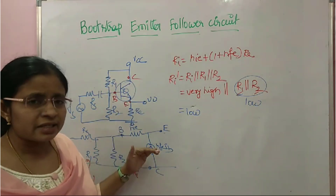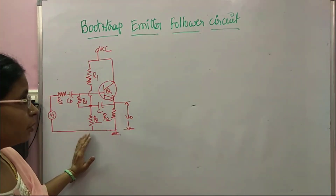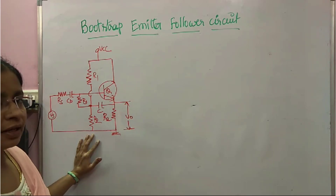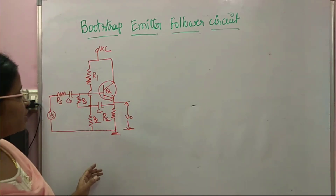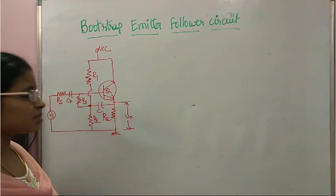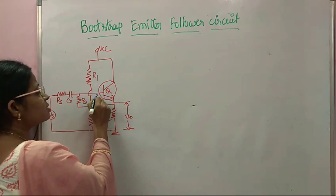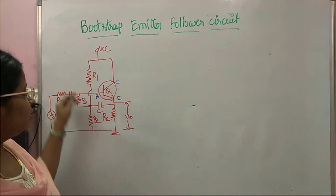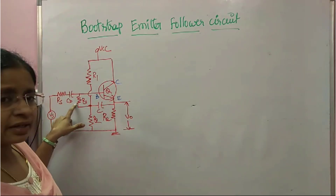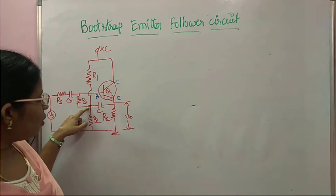Now I'll explain the bootstrap emitter follower circuit, which is an alternative for the high impedance CC amplifier. You know the emitter follower circuit is another name for the common collector amplifier. The difference between this circuit and the previous CC amplifier is that here R1 and R2's center point is connected to R3, and R3's other end is connected to the base. Also, between this center node and the emitter there is a capacitor C.